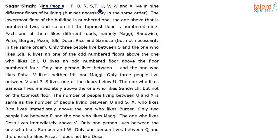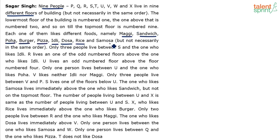Nine people P, Q, R, S, T, U, V, W and X live in nine different floors of a building, not necessarily in the same order. The lowermost floor is numbered one, going up to the topmost floor numbered nine. Each person likes a different food among: maggie, sandwich, poha, burger, pizza, idli, dosa, rice and samosa — nine food items, nine persons, nine floors.